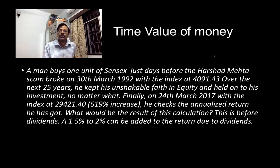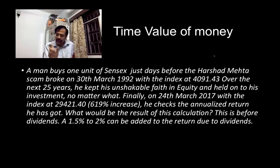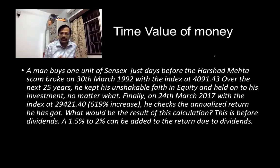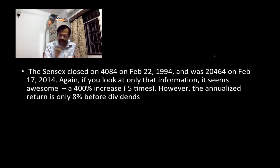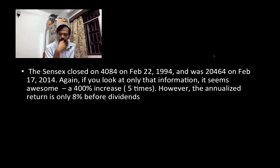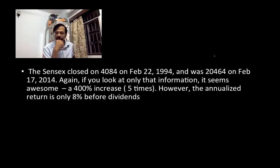Dividends can be anywhere between 1.5 to 2%, but if you include expenses — because you cannot buy a unit of the Sensex without paying someone — and the possibility of tax, that dividend of 1.5-2% will almost get erased. So you will be getting anywhere between 8-9% over this period: 600% profit but only 8-9% return. There is one more example: the Sensex closed around 4,000 on 22nd February 1994 and was again about 20,400 in February 2014 — a 400% increase, or 5x growth, a multi-bagger. The annualized return is again only about 8% before dividends, and 8-9% after accounting for dividends, tax, and expenses.